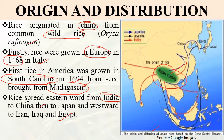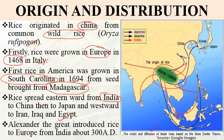Alexander the Great introduced rice into Europe from India around 300 A.D. This is one of the key historical facts regarding the spread of rice.